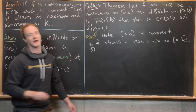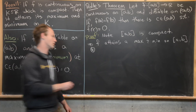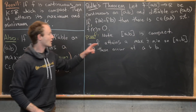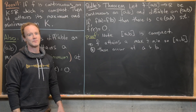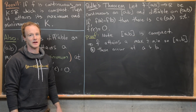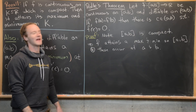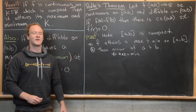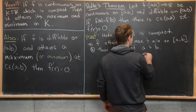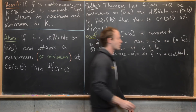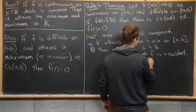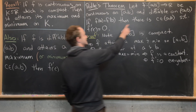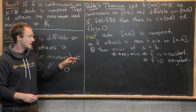Let's look at the first case: the maximum and minimum both occur at the endpoints a and b. If the maximum is at a and the minimum is at b, or vice versa, then the maximum and minimum are the same, given that F of a equals F of b. So the maximum equals the minimum. The only way for a function to have this setup is for F to be a constant function. But if F is constant, its derivative is everywhere zero, so F prime equals zero everywhere. Then there definitely exists some C between a and b such that F prime of C equals zero — you can just take any value of C.